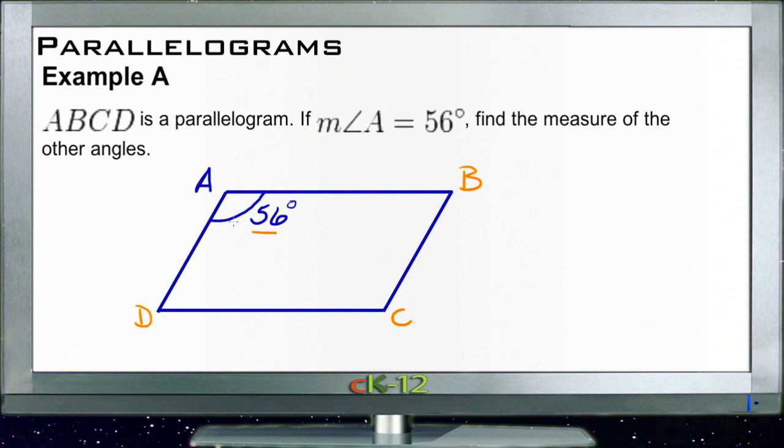First of all, we know if A is 56 degrees, then its opposite angle, since this is a parallelogram, is also 56 degrees. And we also know that based on the fact that it is a parallelogram, that consecutive angles total 180 degrees. So if A is 56 degrees, then we know that B must be the remainder of 180 degrees, or 124 degrees here.